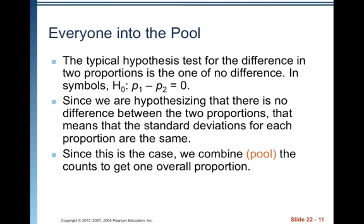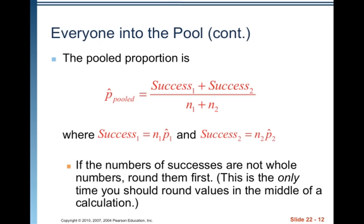Since we are hypothesizing that there is no difference between the two proportions, that means the standard deviations for each proportion are the same because they all come from the same distribution. Since this is the case, we combine or pool the counts to get one overall proportion. The pooled proportion is P hat pooled equals success 1 plus success 2 over N1 plus N2. We call that X1 and X2.